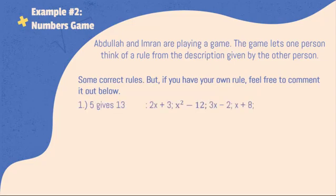Number 1: 5 gives 13. Some possible rules are 2X plus 3, or X square minus 12, or 3X minus 2, and the simplest one, X plus 8.